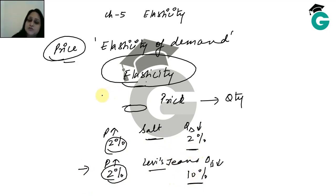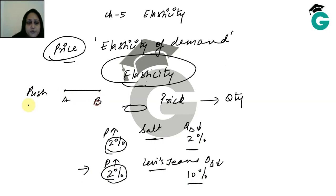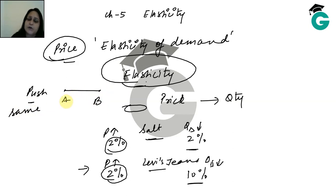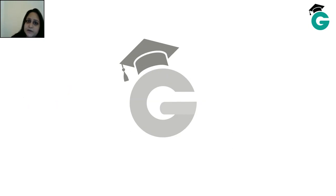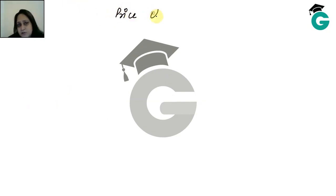As much as we see a greater change in quantity for the same change in price, we call that good more elastic. So elasticity of demand automatically means price elasticity of demand — we change the price and keep the rest of the factors constant.